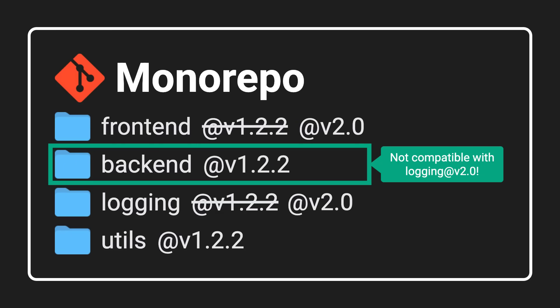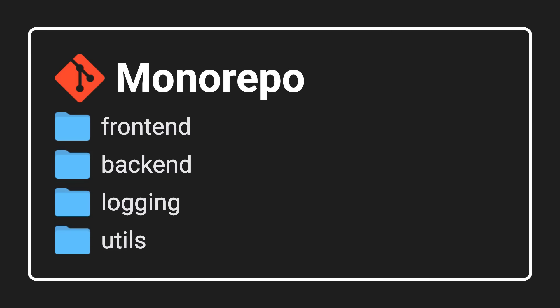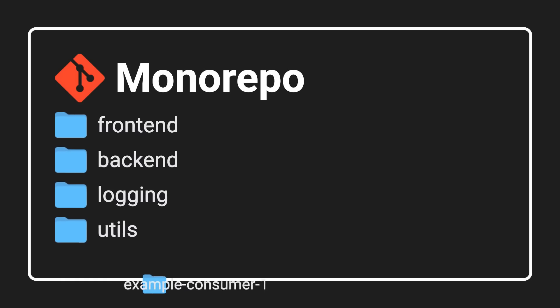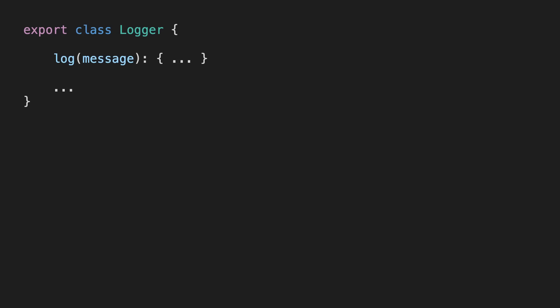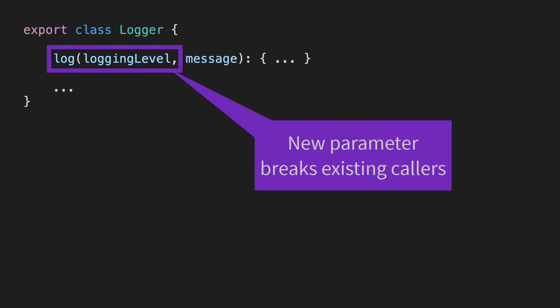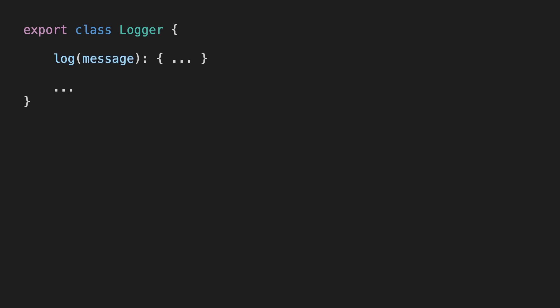Some people will argue that this is actually a good thing, since being forced to upgrade ensures your consumers are always up to date and using the latest version of your internal libraries. In practice, I found that this just isn't always possible or desirable. Keep in mind that this is just a simple example with two consumers — as your project and the number of consumers grow, upgrading them all can become a major burden. Of course, there are multiple ways to work around this. For example, whenever you make a breaking change to a library, you could ensure the library is still backwards compatible with old consumers. In our logging library, let's say we want to add a new parameter to a method — we can't just add it to the existing method since it would break callers that haven't been updated. So instead, we could keep the old version around and add a new method.